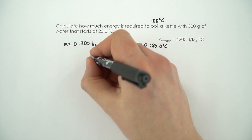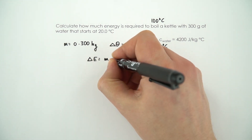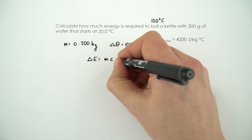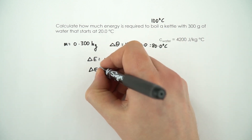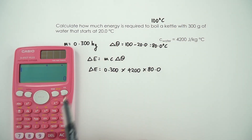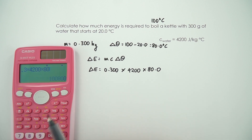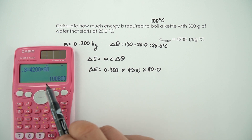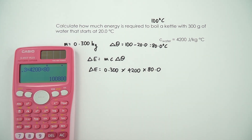The equation we're going to use is delta E equals mc delta theta. Putting in the numbers: 0.3 times 4200 times 80, and this gives an answer of 100,800 joules. So big numbers.